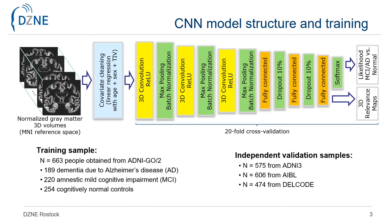The model was trained on approximately 600 scans, which were augmented to roughly 7,000 input images using translation of 1 cm in each direction and left and right flipping. For training, we further applied a 20-fold cross-validation procedure followed by an evaluation of the models with 3 independent samples including more than 1,600 cases.